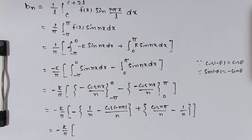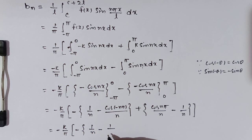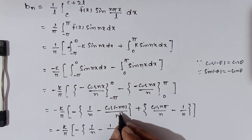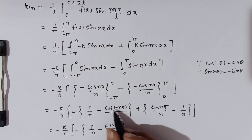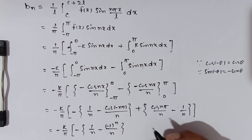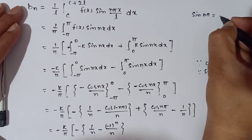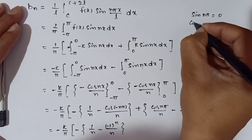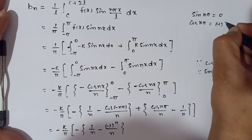So we use cos(nπ) = (-1)ⁿ. Let me explain this with the cos graph: cos(0) = 1, cos(π) = -1, cos(2π) = 1. For even multiples of π, the function value is 1, and for odd multiples, it is -1. In general, cos(nπ) = (-1)ⁿ.